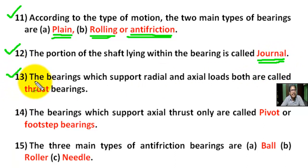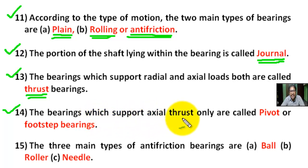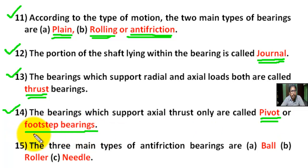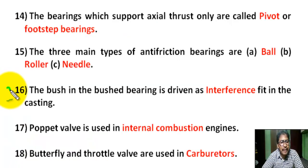Question number 13: The bearings which support radial and axial loads both are called a thrust bearing. Question number 14: The bearings which support axial thrust only are called a pivot or footstep bearing. Question number 15: The three main types of anti-friction bearings are ball bearing, roller bearing, and needle bearing.